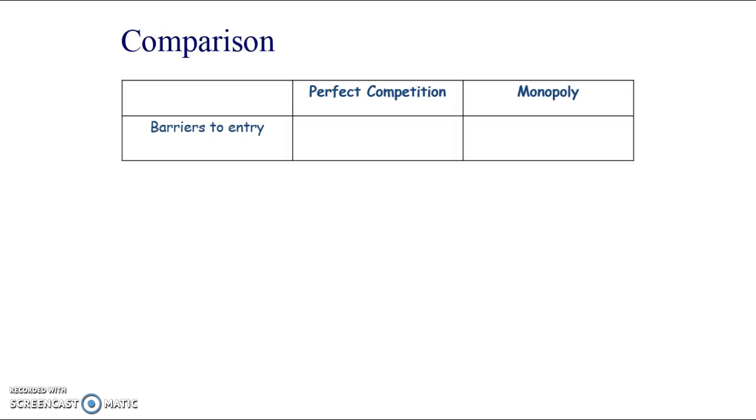If we look at our two extremes of market structure, perfect competition and monopoly, and go through some of the components that separate them, in terms of barriers to entry, we know that perfect competition has no barriers to entry or very low barriers to entry, and monopolies have such high barriers to entry that there's only going to be one firm in the market.